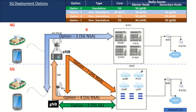Option 7 is again a non-standalone option where the master node is 4G and both radio access technologies are present. In this case, the connectivity is with the 5G core network — 5GC. This is just a similar interpretation of the previous slide but presented in a different way, so that we can connect the dots in a better way.